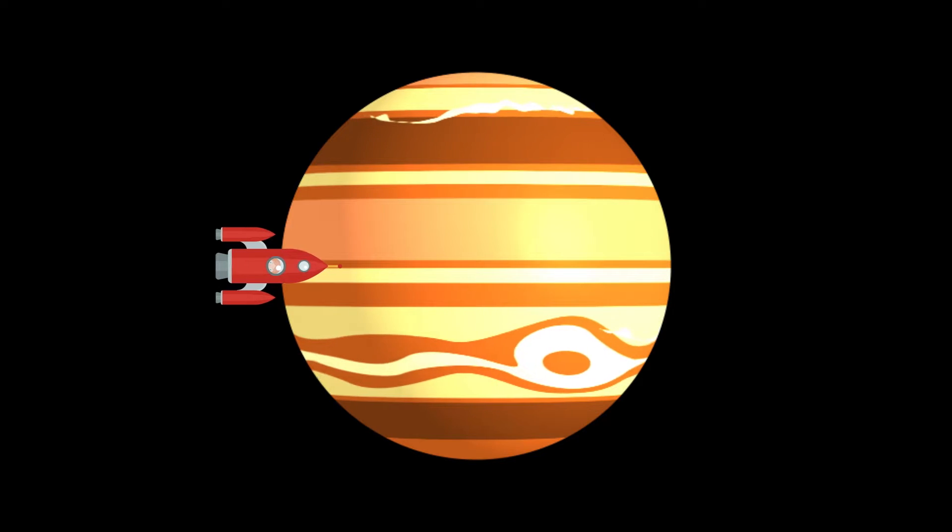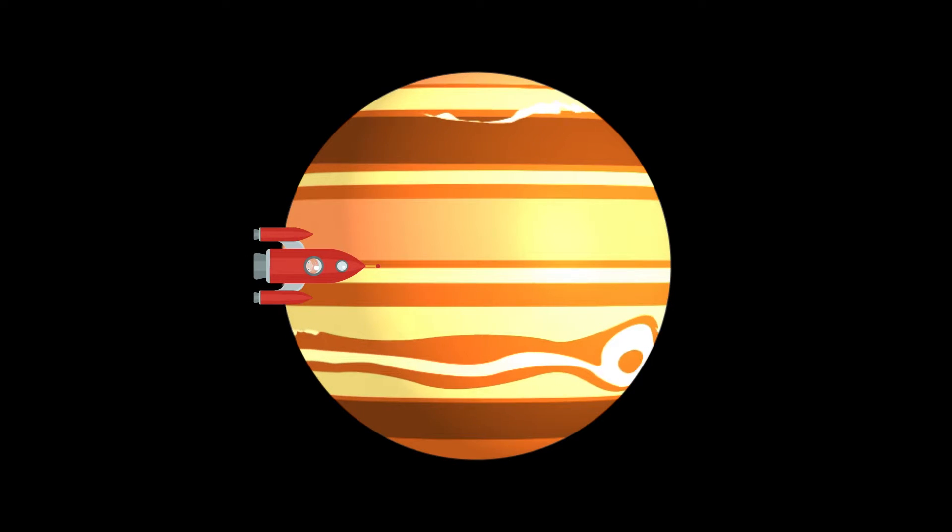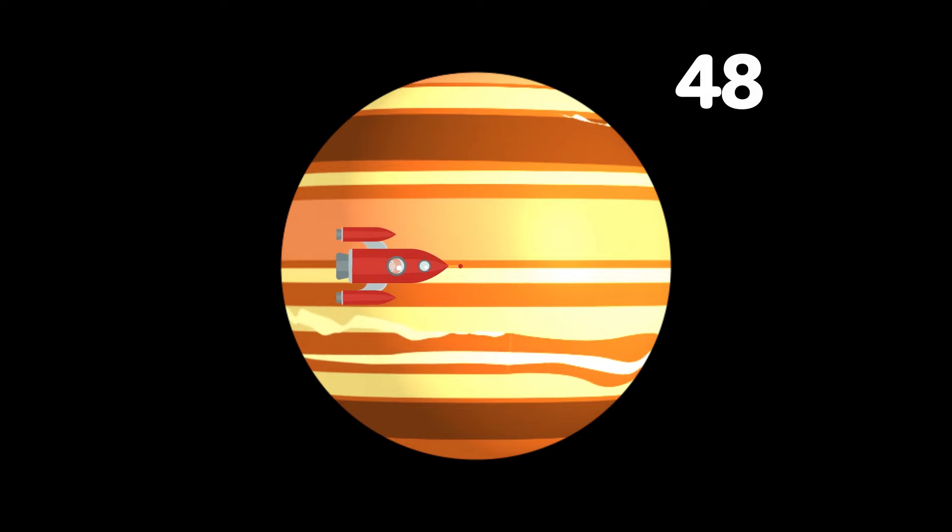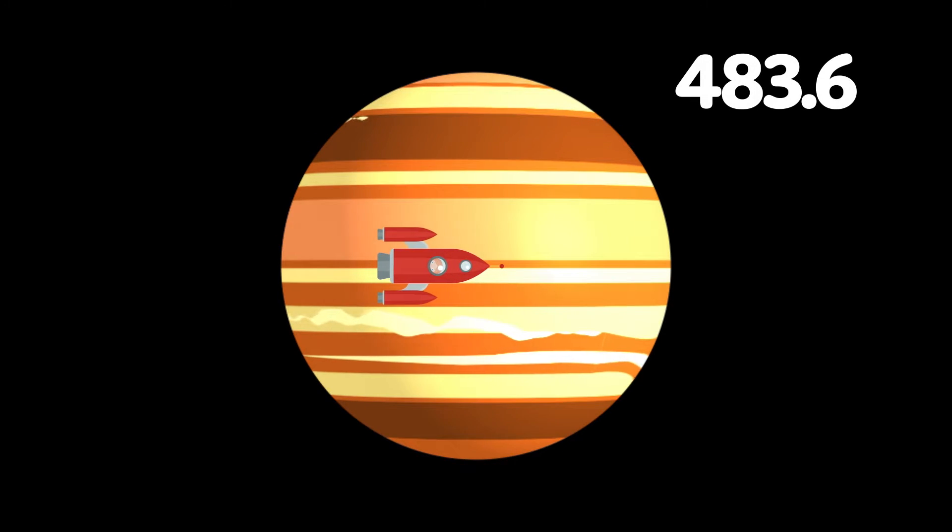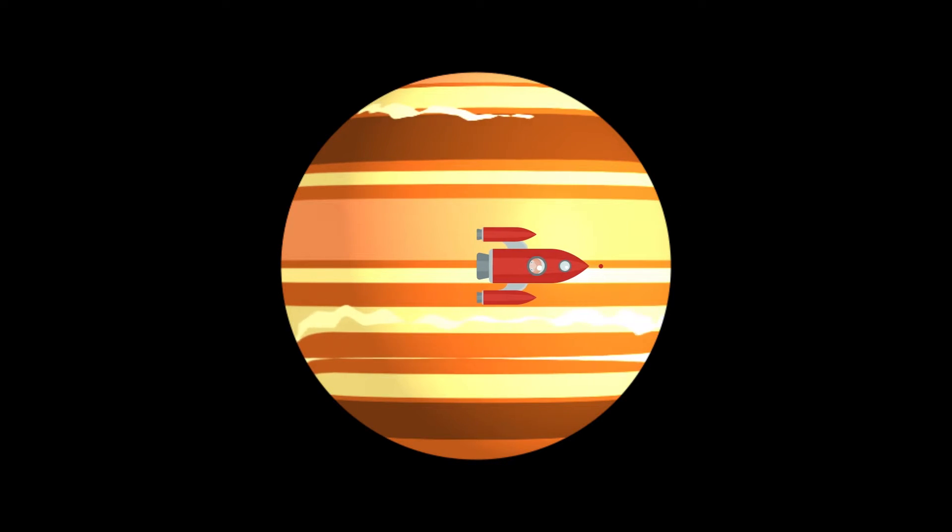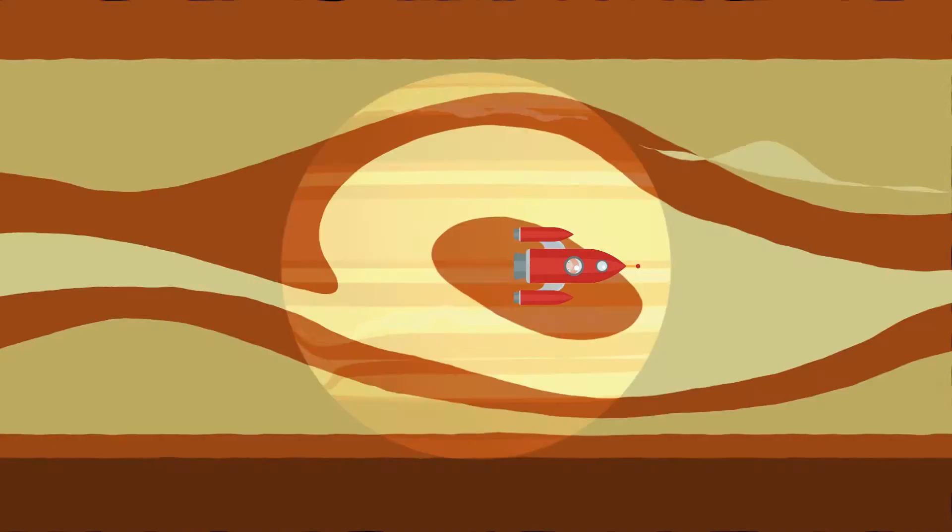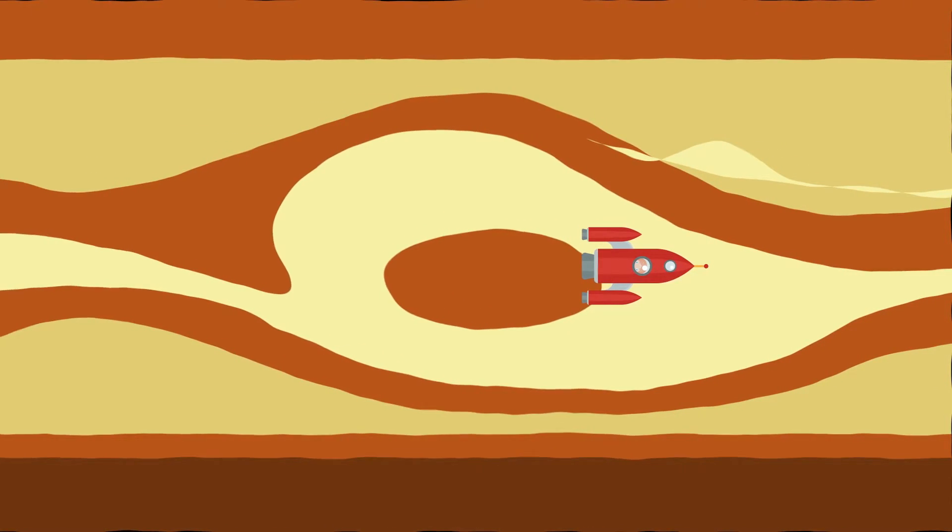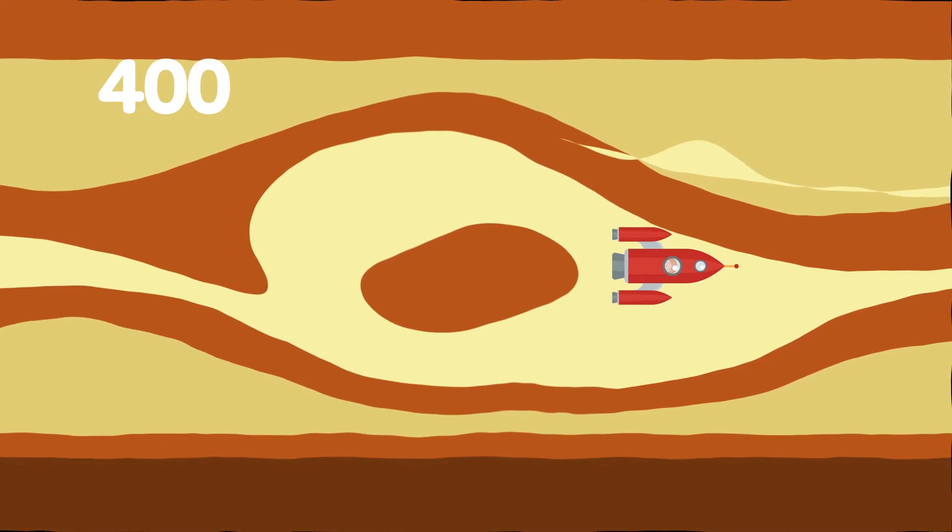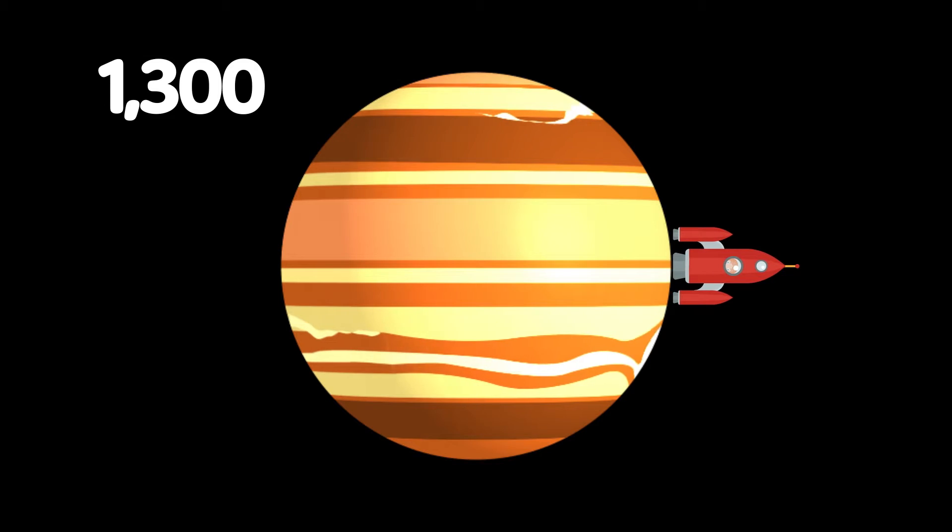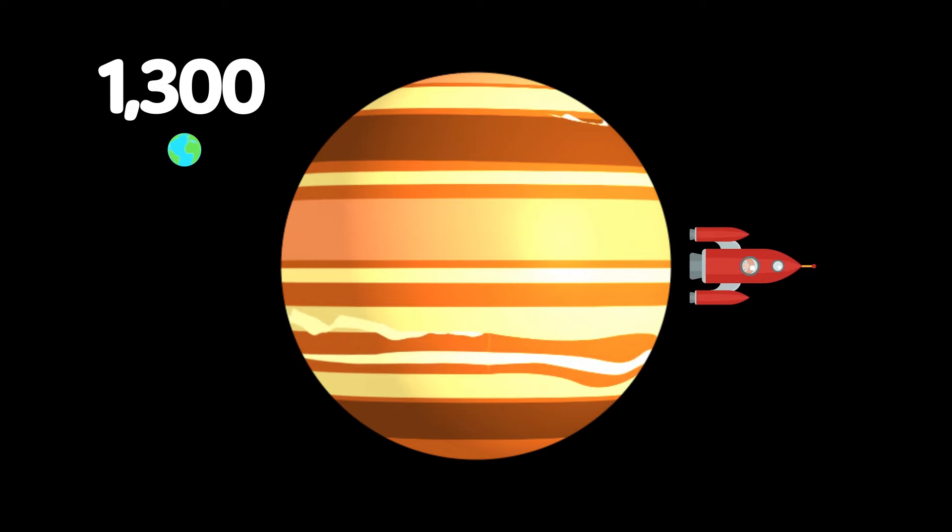Here is the fifth planet, Jupiter. It is 483.6 million miles from the sun. Jupiter is the stormiest planet. It has a storm called the Great Red Spot that is 400 years old. It is so big, 1,300 Earths could fit inside this gas giant!